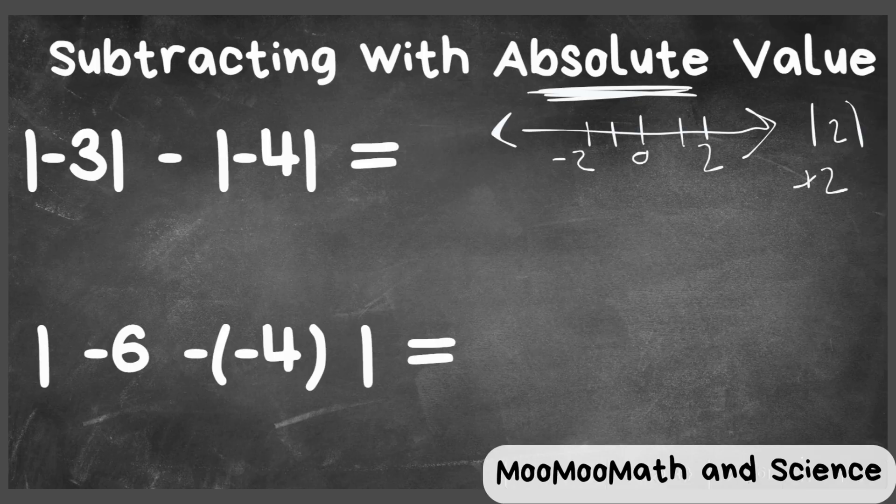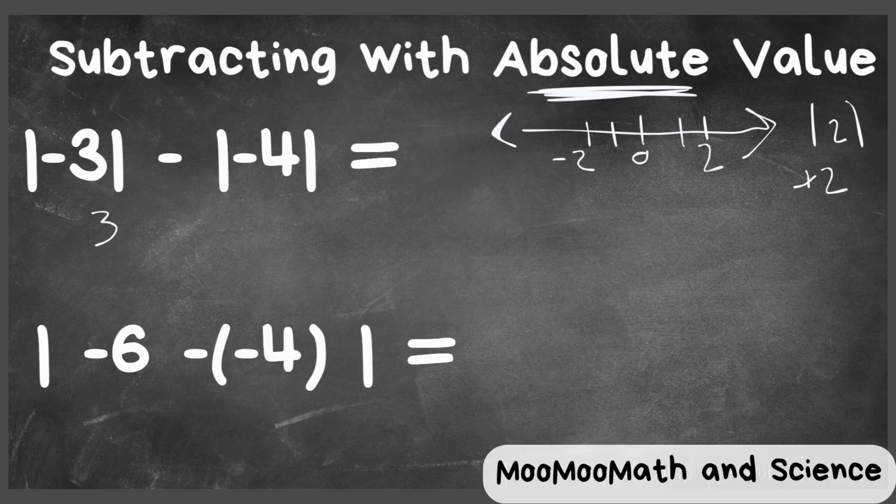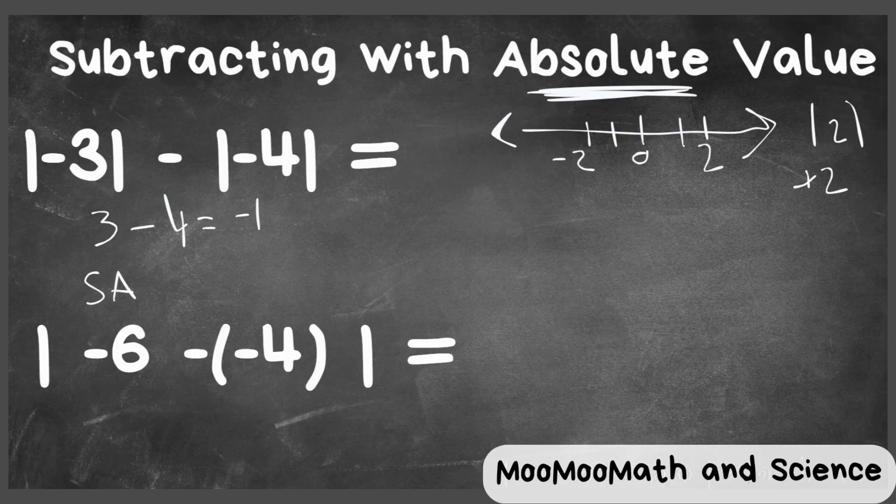So now we have absolute value of negative three, which is three, minus absolute value of negative four, which is four. So now we have three minus four, which is negative one. You can also use SADS: same signs you add and keep the sign; different signs you subtract.